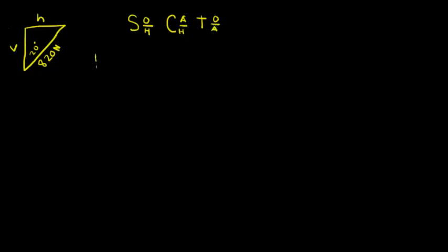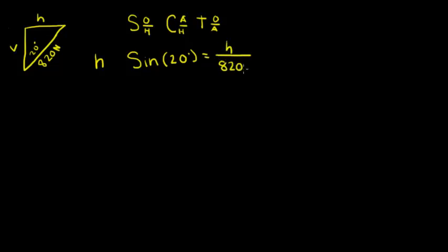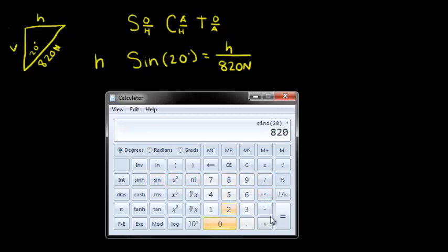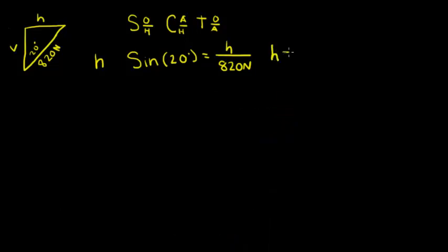Let's do horizontal first. The horizontal is the opposite side of the angle, and we know the hypotenuse, so we'll use sine. The sine of 20 degrees equals the opposite side H — what we're solving for — over the hypotenuse, which is 820 newtons. Plugging this into our calculator, H equals 280.46 newtons.